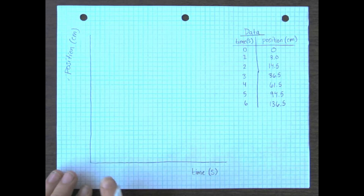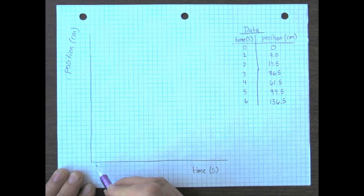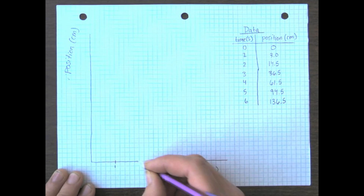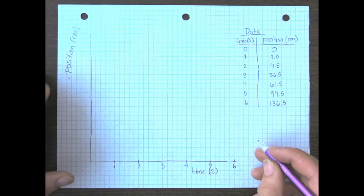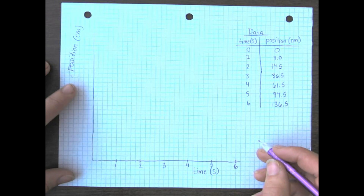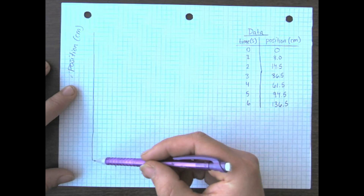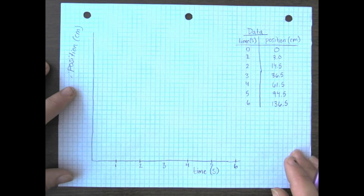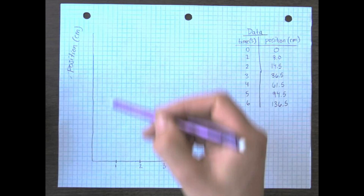Let's say every five grid squares equals one second, so we can count out six seconds along the x-axis. Now we'll scale the position axis — we've got to get all the way up to 136.5 centimeters. We want to make it as big as possible. If we consider every box to be five centimeters, we should get a pretty good scale — going 5, 10, 15, 20, 25, and so on all the way up.